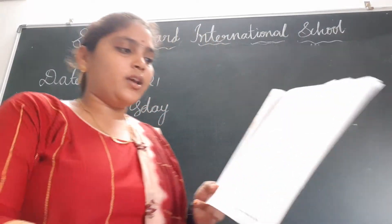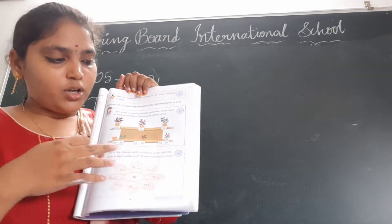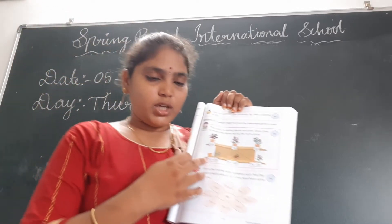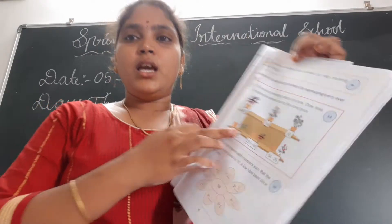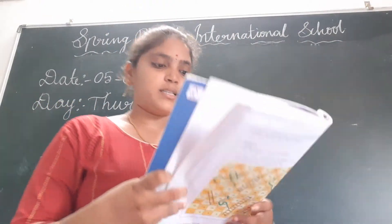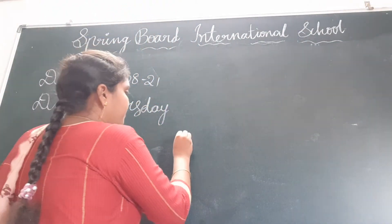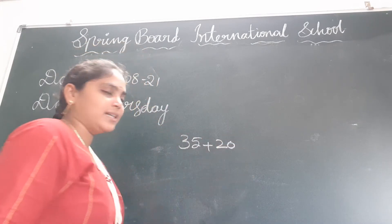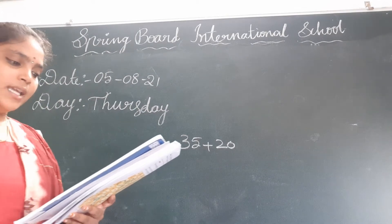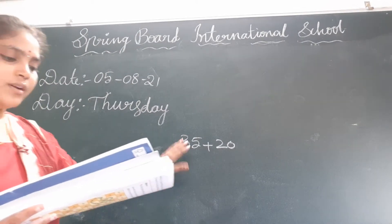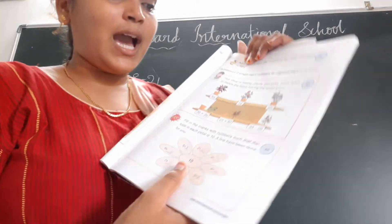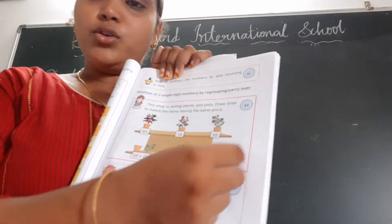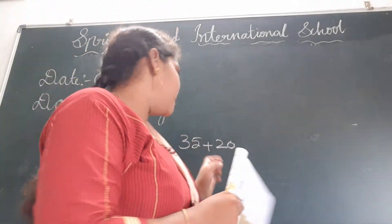How do we find the answers, children? We are given two addition problems and one subtraction problem. If we add or subtract these numbers, we will get the values, and then we can match the numbers. First, we are given 35 plus 20. Everyone add these numbers using the space provided.